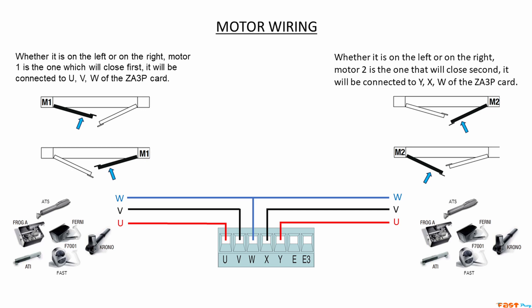Each time you want to check the motor direction again, reposition the gates halfway, cut and restore power, and send a command. The motors should open.